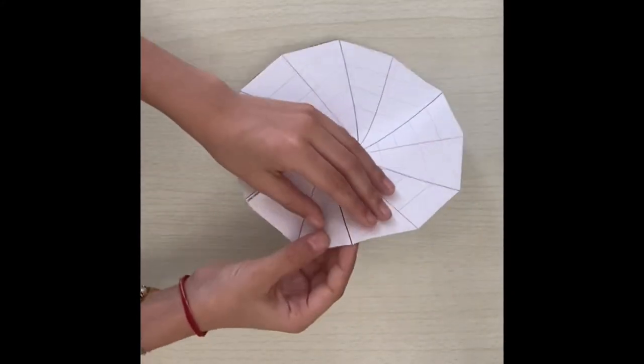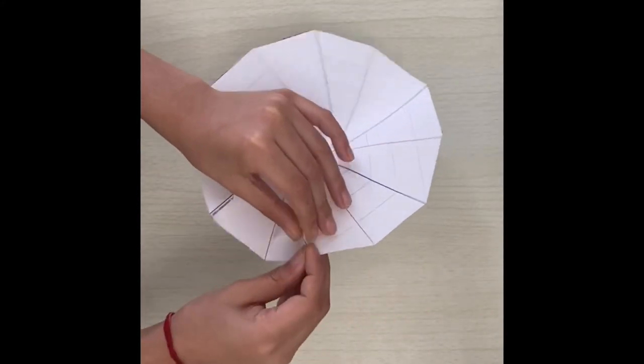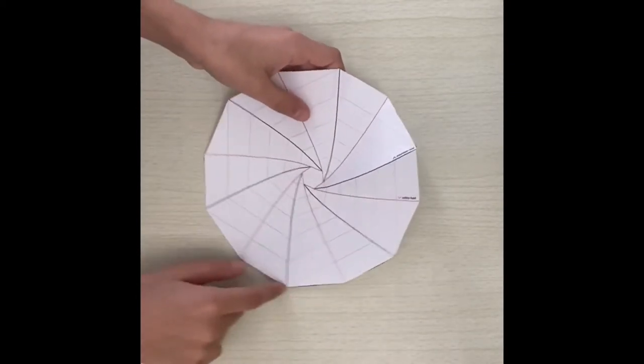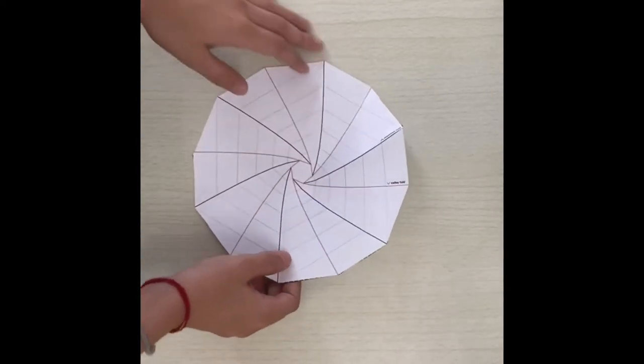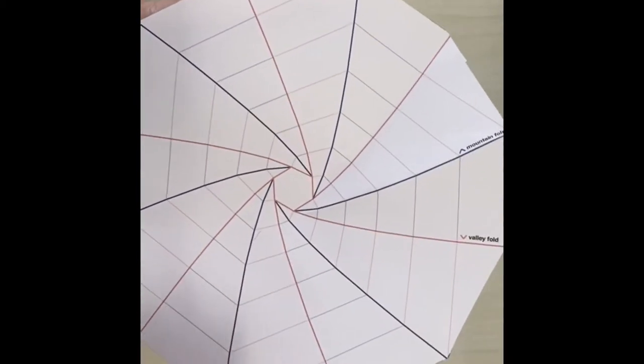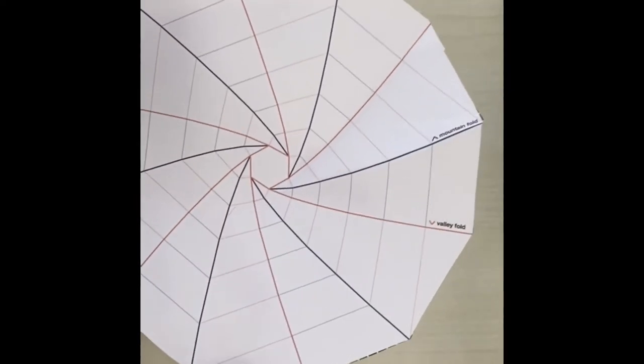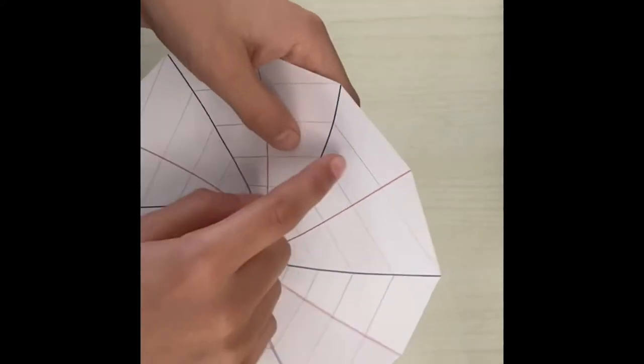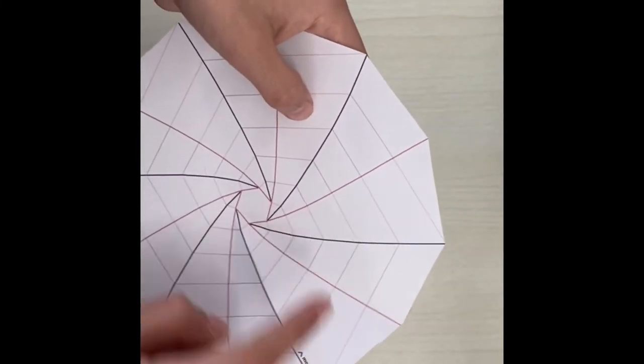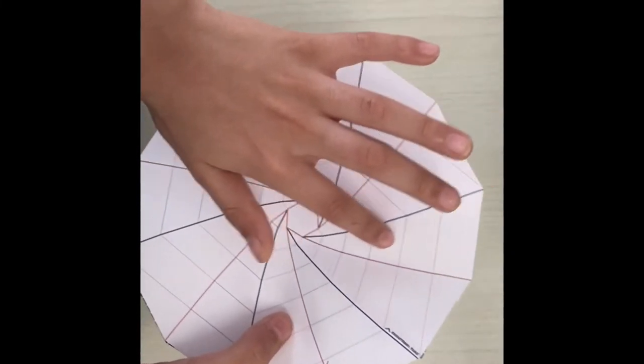You want to repeat this on all of these lines until you get the full thing done. And if you want to increase the crispness, or how it folds of your star shade, you can also crease on these blue lines and red lines that are in the middle. But that is an option.